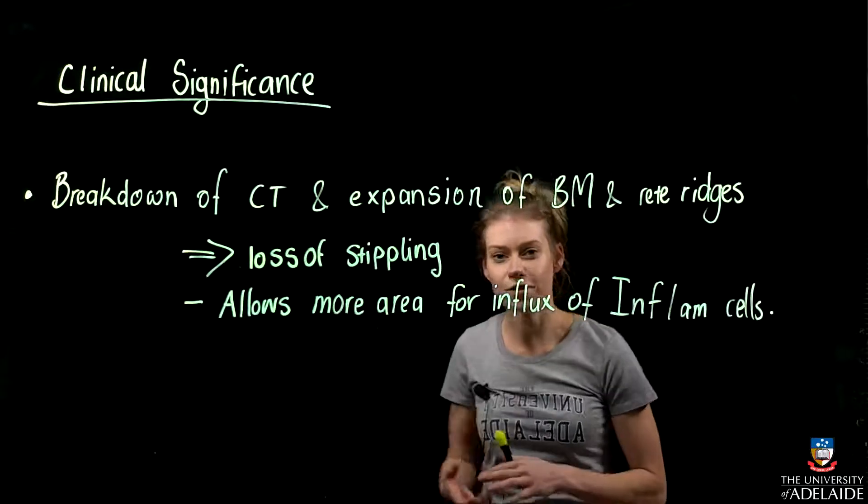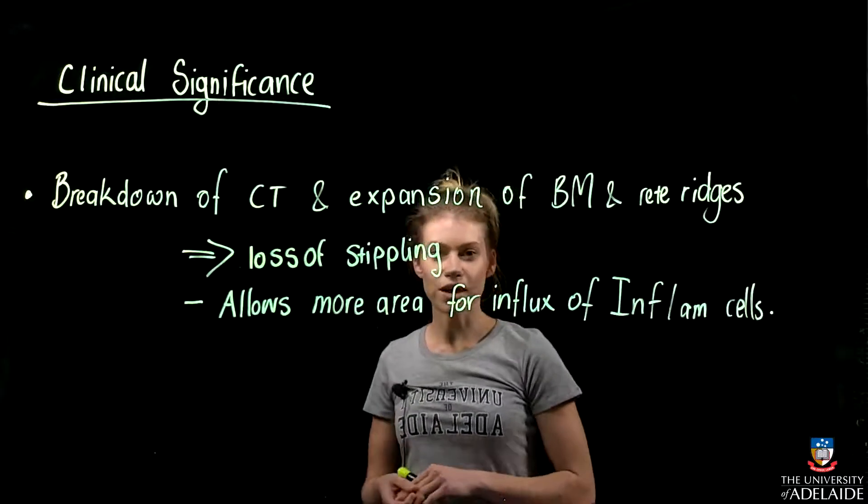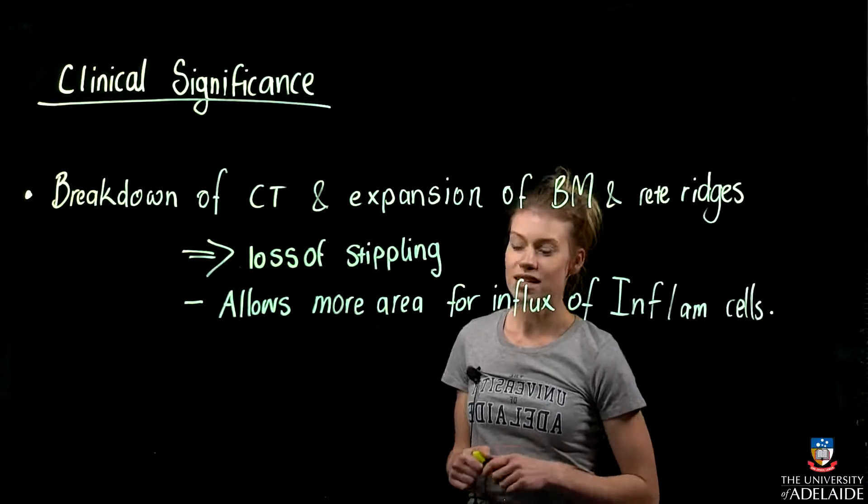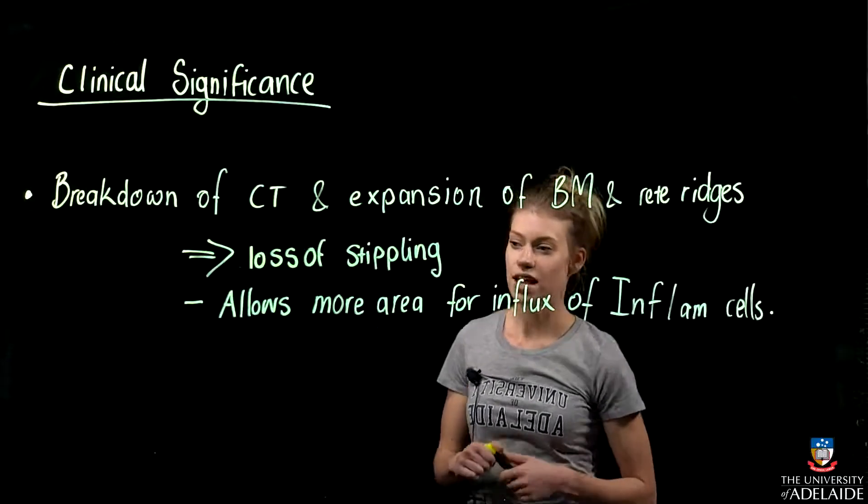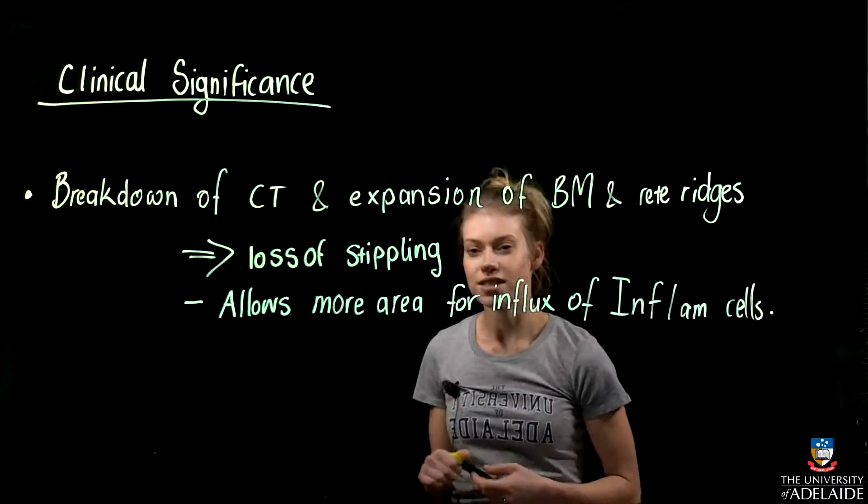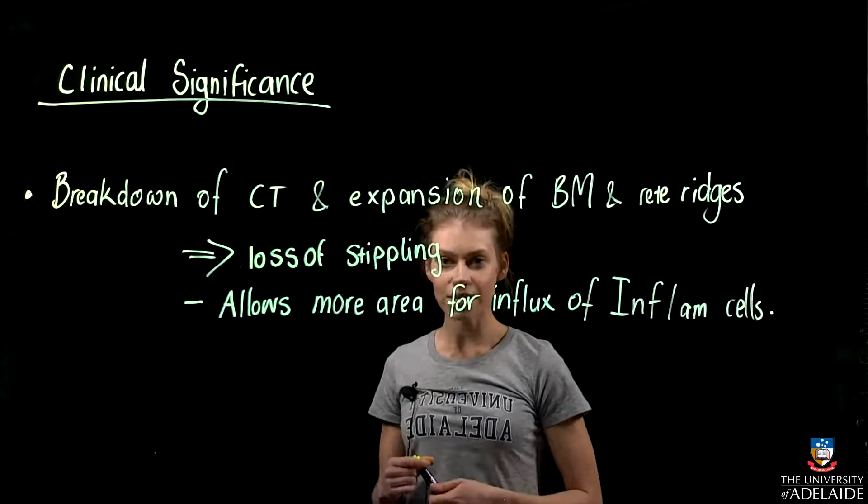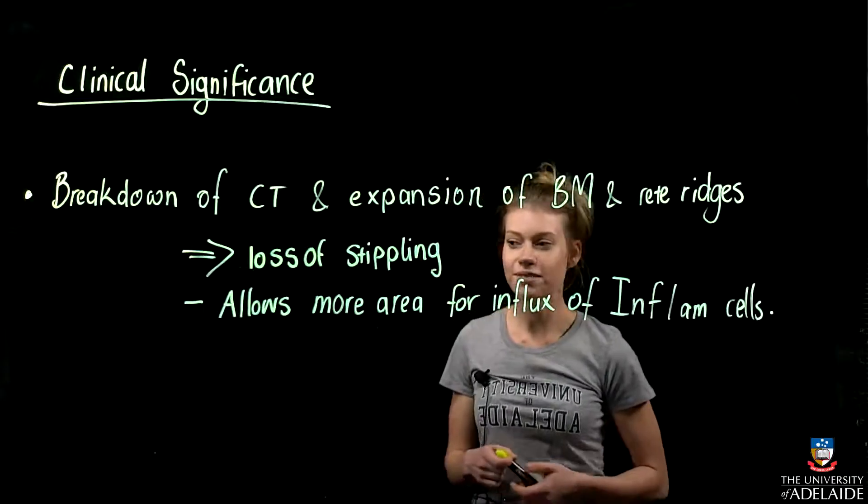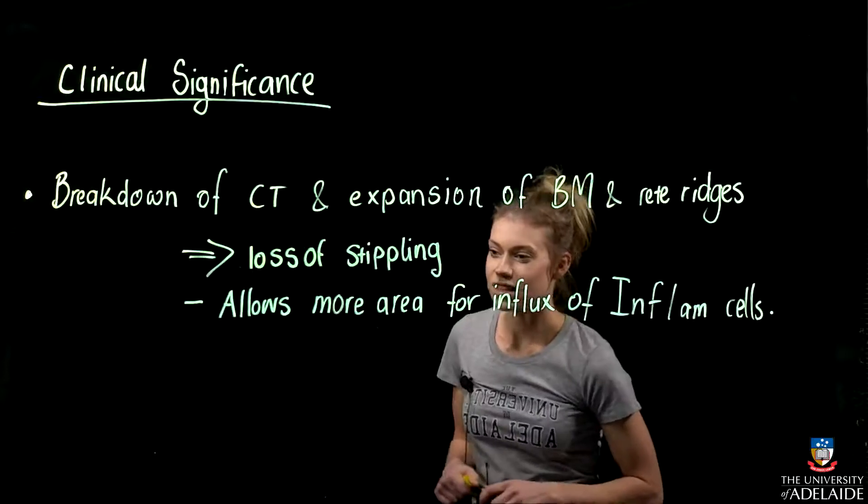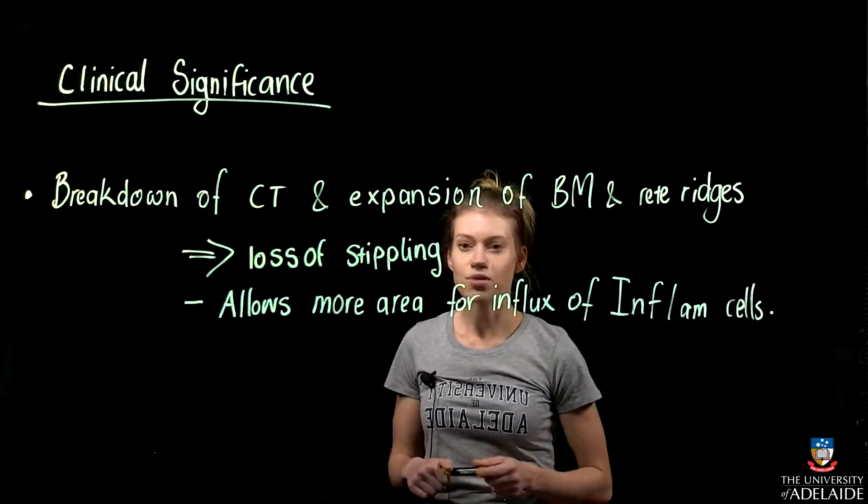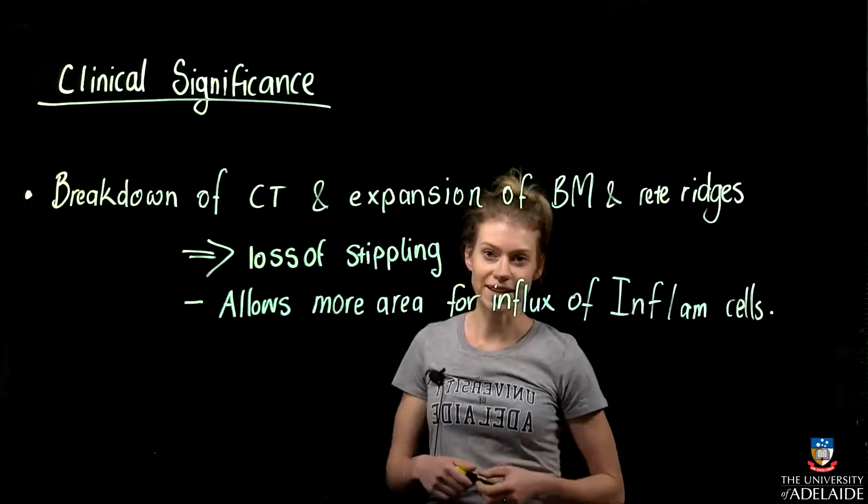The increase of biofilm and plaque equals a migration of the junctional epithelium laterally, which means there's no bone loss yet and there's no attachment loss. This is just seen sometimes as a perceived increase in pocket depth, which is known as pseudopocketing. The clinical importance of this is that gingivitis needs to be reduced to get ideal pocket readings.